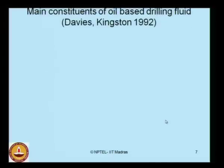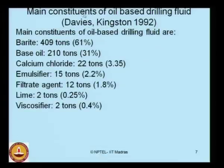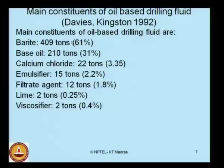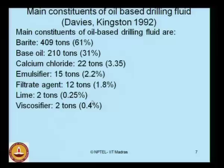Let us look at the main constituents of oil-based drilling fluid. They contain barite, base oil, calcium chloride, emulsifiers, filtrate agents, lime, and viscoifiers. Barite is about 419 tons, constituting about 61% of the total. Base oil is about 210 tons, contributing about 31%. Calcium chloride constitutes about 3.35%, emulsifiers about 2.2%, filtrate agents about 1.8%, lime about 2 tons at 0.25%, and viscoifiers about 2 tons of the total drilling fluid.